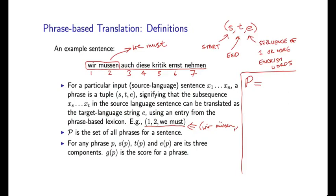These are going to be derived through entries. This comes from the fact that we have some phrase entry in our lexicon saying that these two words can be translated as we must. And because these two words appear here, we can apply this entry. It's just going to be more convenient to think of these phrases once we have a particular input sentence as having a start point, an end point, and an English string. So P is the set of all possible phrases for a sentence. This might include one, two, we must; it might include one, three, we must also; it might include six, six, seriously. That would come from an entry saying that the word ernst, which is sixth here, can be translated as seriously.